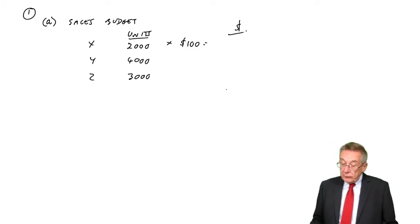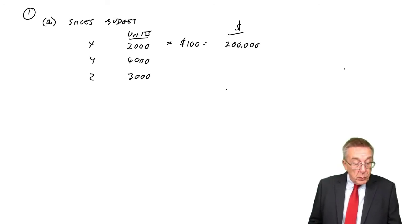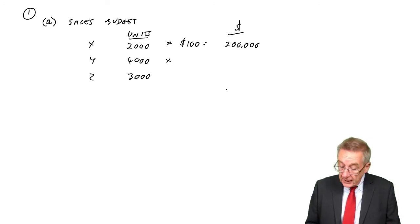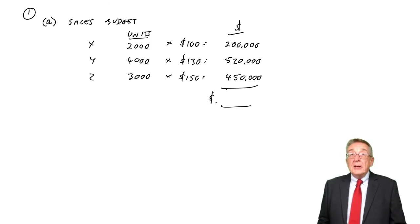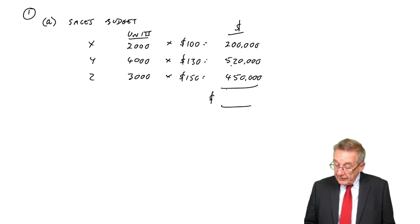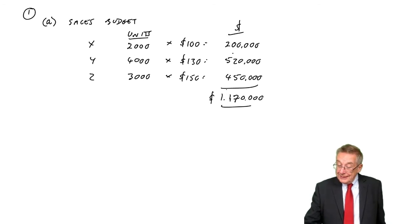We also want to know how much revenue we're budgeting on earning. Product X, we're selling at $100, so we're budgeting on revenue of $200,000. Product Y, 4,000 at $130 each, $520,000. And product Z, $150 each, $450,000.